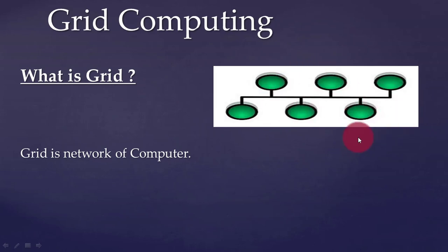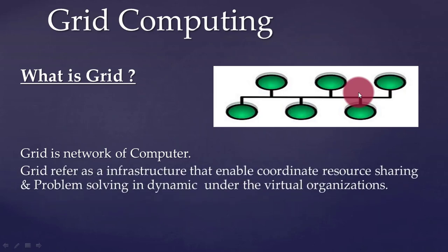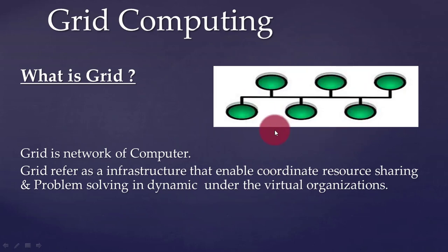These nodes or computers are distributed all over a geographical area and connected through a communication network. The main purpose of the grid is to build an infrastructure so each node can coordinate and enable resource sharing. The grid refers to an infrastructure that enables coordinated resource sharing and problem solving in a dynamic virtual organization, so that complex problems can be solved under that virtual organization.